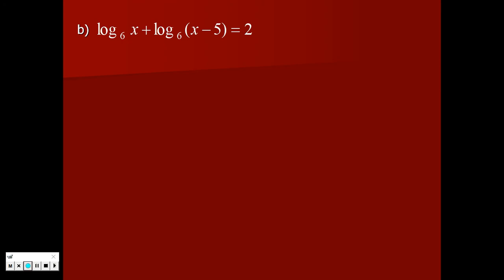Special case D: log base 6 of x plus log base 6 of (x minus 5) equals 2. Here you need log laws. When you have two separate logs, log law number one says if you're adding two logs you can change it to multiplying the two insides inside a single log. That's really handy because now you can bring the log base 6 over — do its inverse — and get 6 to the power of 2, which is 36. The rest is just old quadratic-type solving.